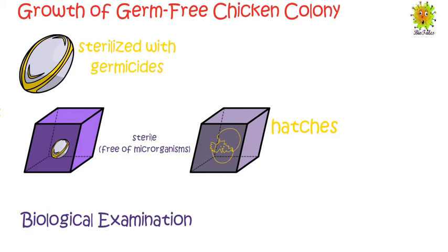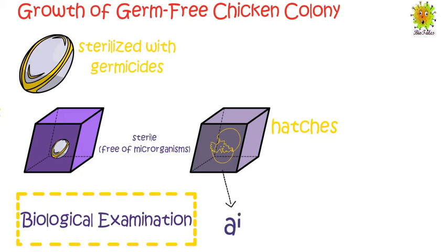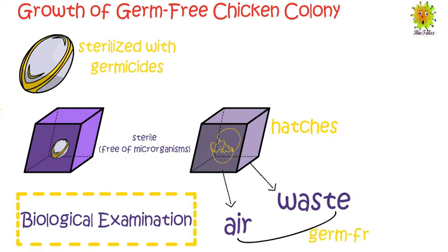The biological examinations involve checking whether the exhaust air and waste material coming out from the cage are germ-free. The exhaust air and waste material must be free of any type of microorganism — this confirms that the animal is notobiotic.